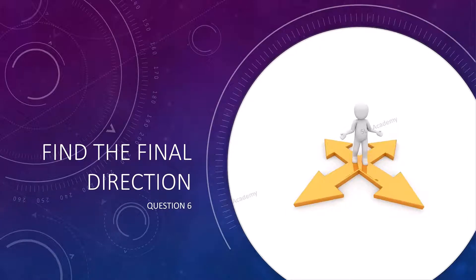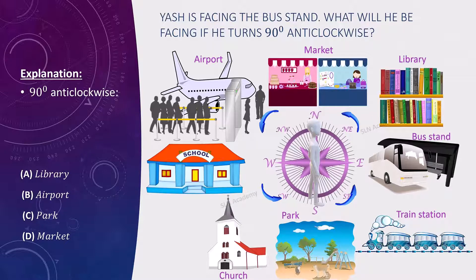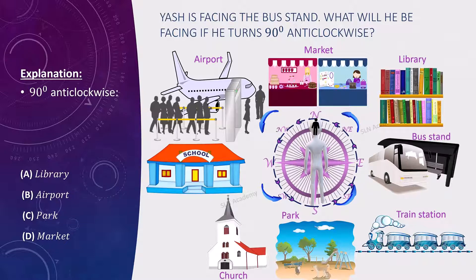Question 6: Find the final direction. Ash is facing the bus stand. What will he face if he turns 90 degrees anticlockwise? Options: A — Library, B — Airport, C — Park, D — Market. He makes a 90-degree anticlockwise turn. He was initially facing east, and after the 90-degree anticlockwise turn he faces north — the market. The answer is Option D, Market.